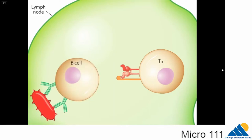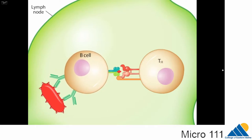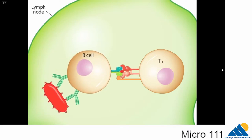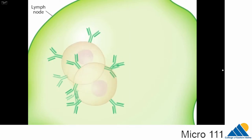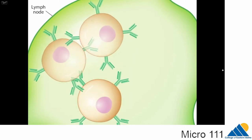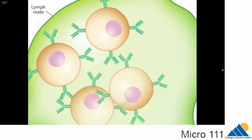In addition to producing antibodies, B-cells are also antigen-presenting cells. They take in and digest some of the antigens that their antibodies bind to, and then display them on their surface with MHC2 proteins. When a T-cell receptor of an activated T-cell binds to the presented antigen, the B-cell receives its first activation signal. The binding of two more proteins on the B and T-cell surfaces triggers the second signal needed for B-cell activation. Now activated, the B-cell undergoes clonal expansion.